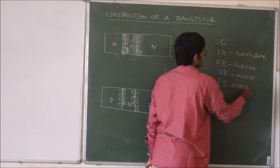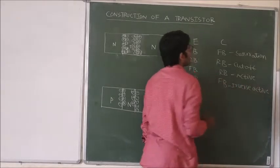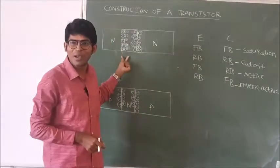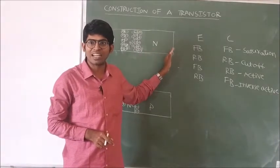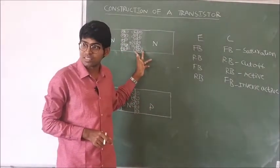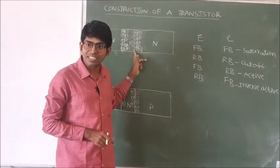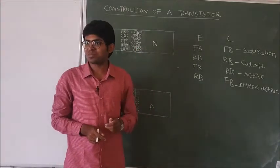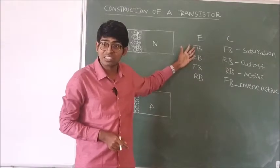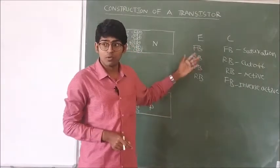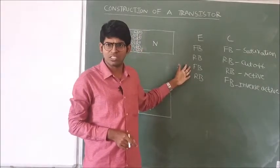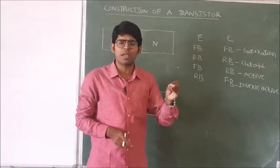The inverse active region is when both junctions have opposite bias to the active region. When the transistor is in the saturation region — emitter junction forward biased and collector junction forward biased — the transistor acts like a simple on-switch. When both junctions are reverse biased, the transistor acts like an off-switch. In the active region, the transistor is used for amplification. In the inverse active region, the transistor simply acts like a resistor.